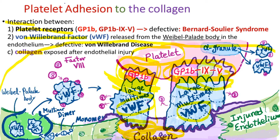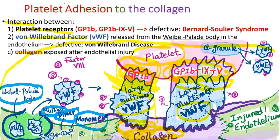Von Willebrand factors are synthesized in the vascular endothelial cells as monomers, and the monomers become dimers and multimers through polymerization. The multimers are stored in the Weibel-Palade body, the storage granule located in the endothelium. It is the large-size multimers that function as a glue — not the monomer, dimer, or medium-size multimers. Von Willebrand factors are also released from the alpha granules of activated platelets.